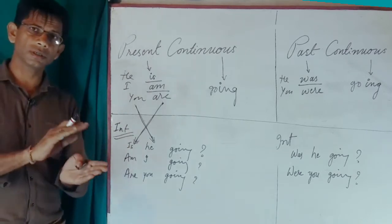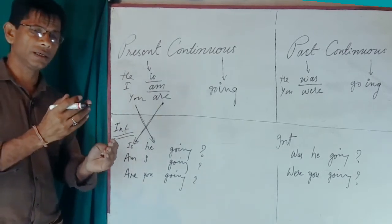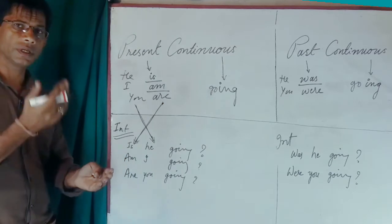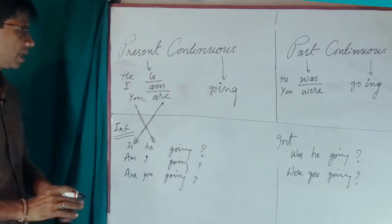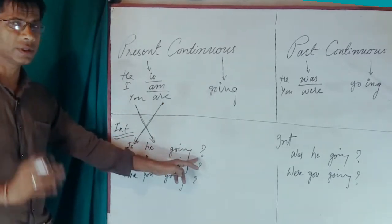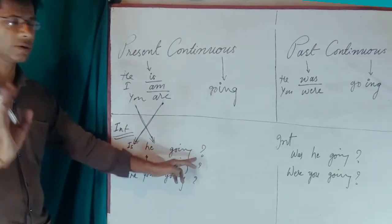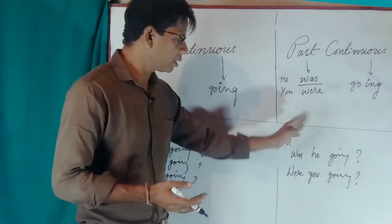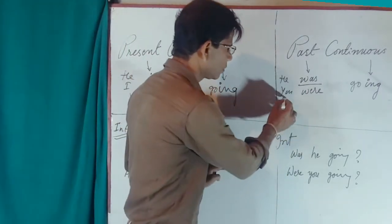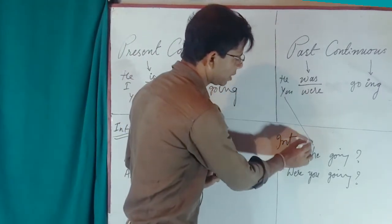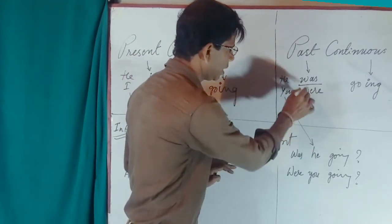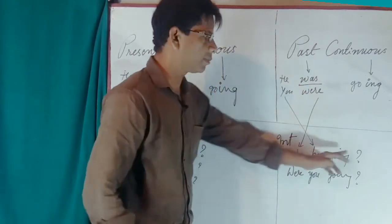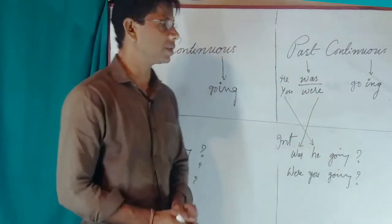You just have to transfer the subject in place of the helping verb, and the helping verb goes in place of the subject. At the end of the sentence, you just have to put a question mark. In the same way, for past interrogative, the subject goes in place of the helping verb and the helping verb goes in place of the subject, with a question mark.